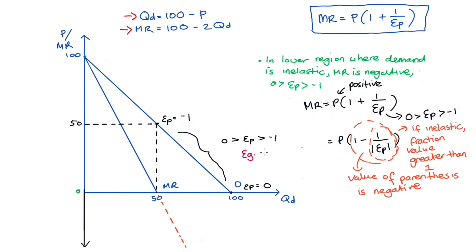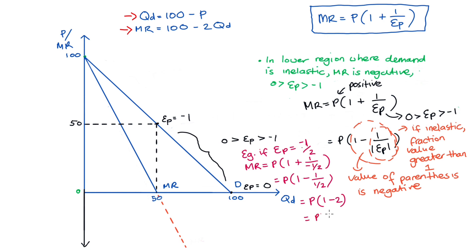So whilst price is positive, it multiplies something negative in our equation, and marginal revenue ends up negative. For instance, if elasticity is negative 1/2, the parenthesis is 1 plus 1 divided by negative 1/2, which simplifies to 1 minus 1 divided by 1/2. Since 1 divided by 1/2 is 2, we're left with 1 minus 2 in the parenthesis, which equals negative 1. Negative 1 multiplied by a positive price gives negative marginal revenue. I'll leave it to you to explore further — the more inelastic demand is, the more negative marginal revenue becomes.